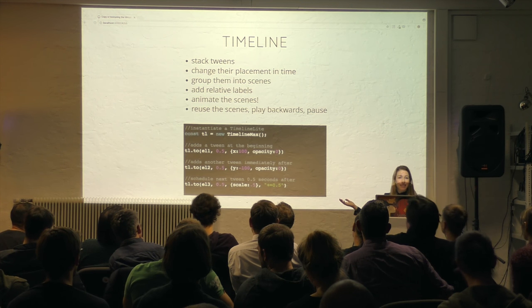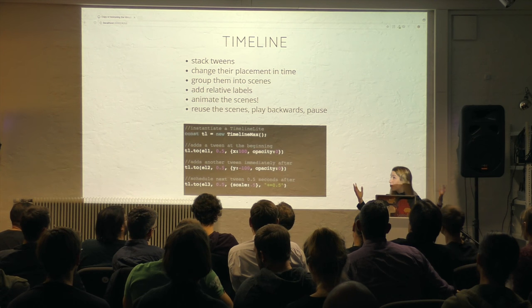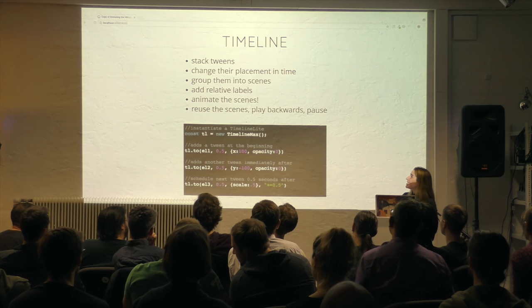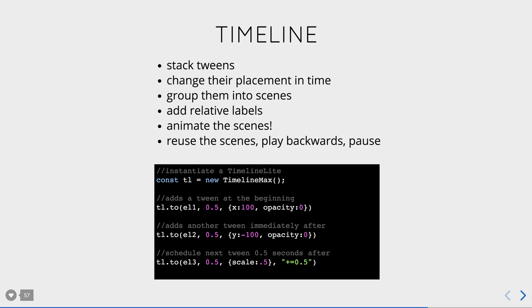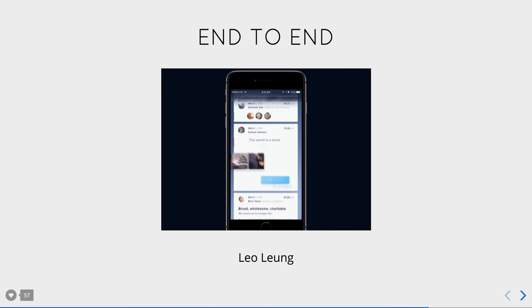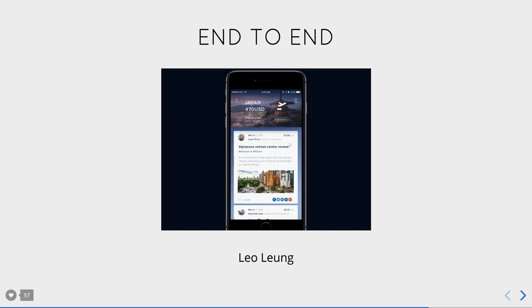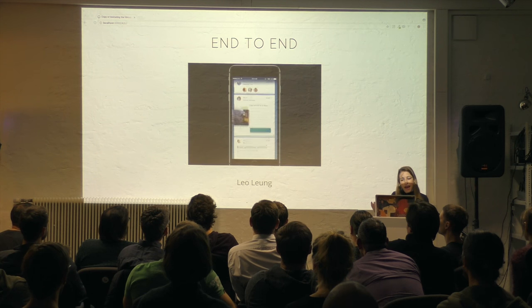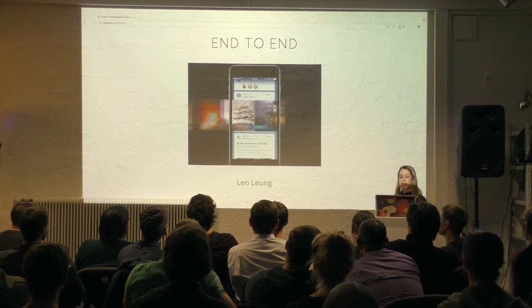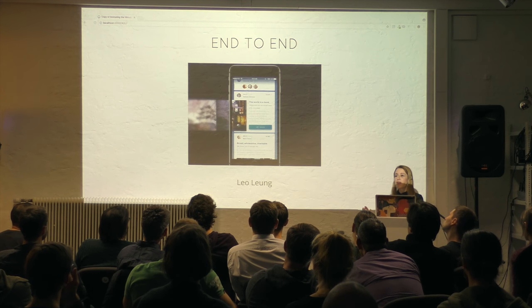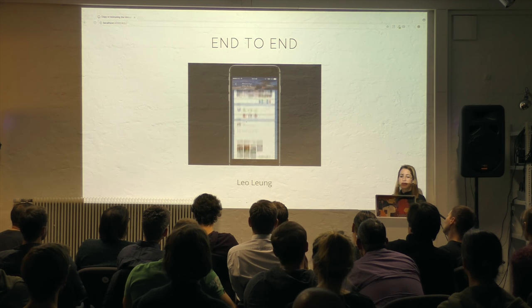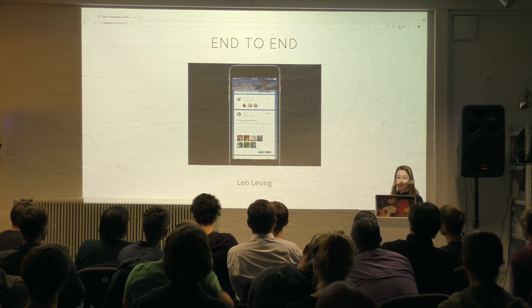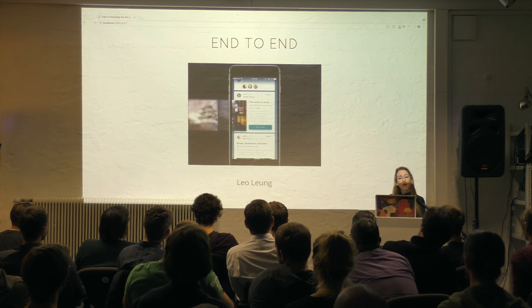We can also animate the scenes — you can animate your animations. You can reuse scenes, play them backwards, and pause them. You can create really beautiful effects like this example from Leo Long. We talked about creating a seamless transition from beginning to end of a user journey — we'll find the end of that story and make sure transitions go from one state to another as seamlessly as possible. You can see nice morphing of a button from a circle to a rectangle, as well as how the layout has to move over — a few things that really need to be coordinated in time.